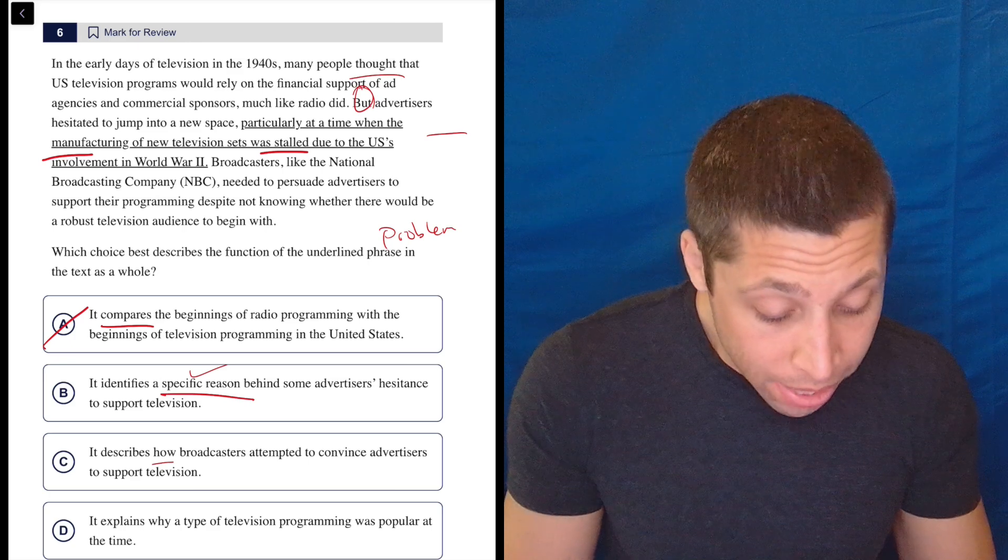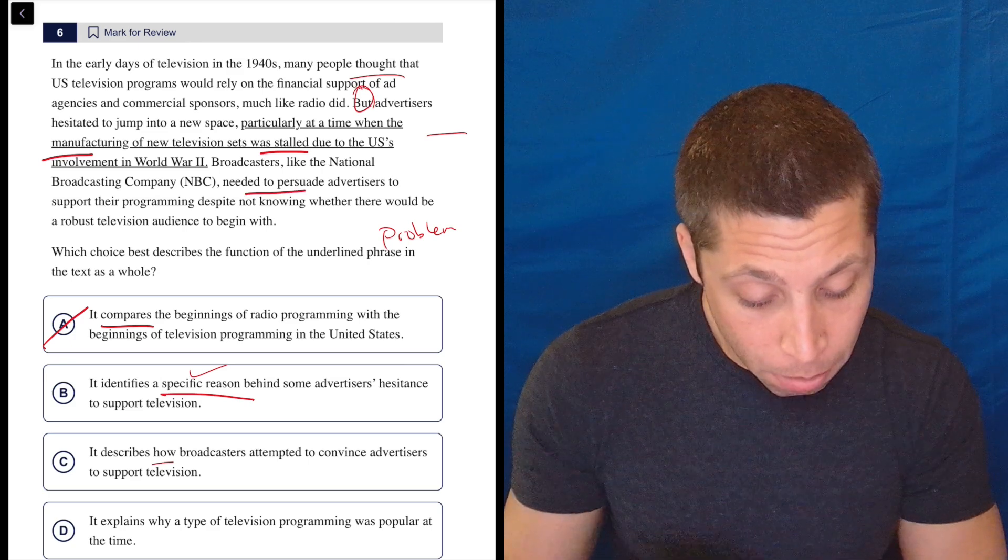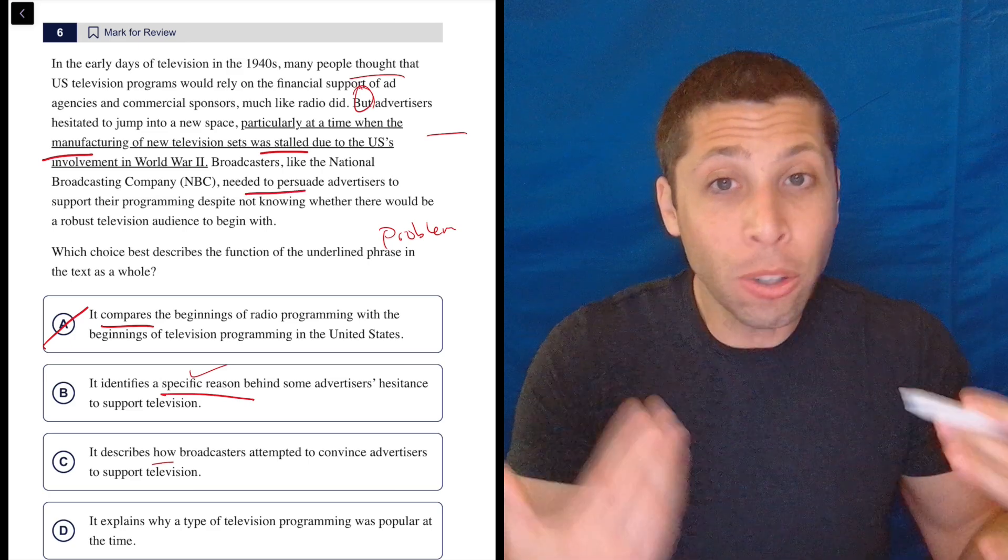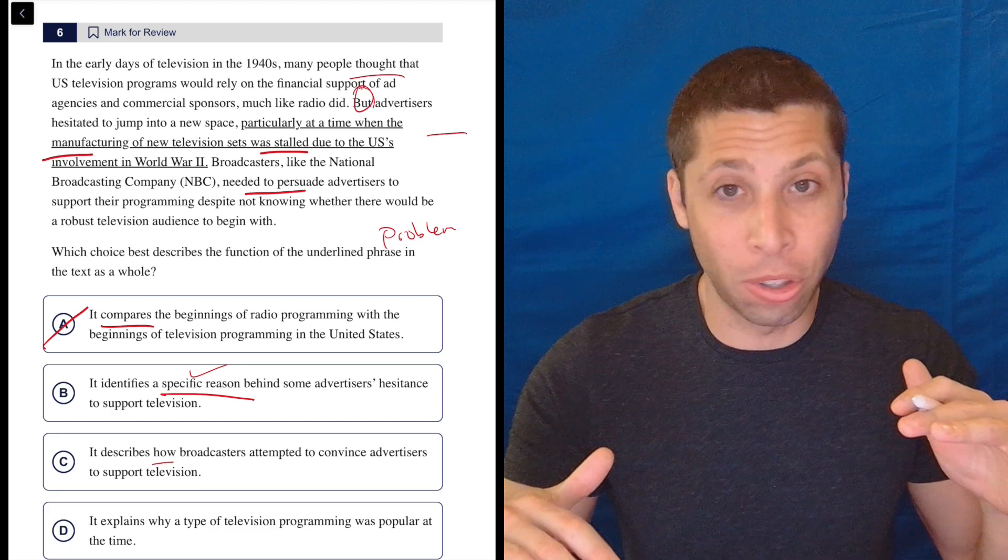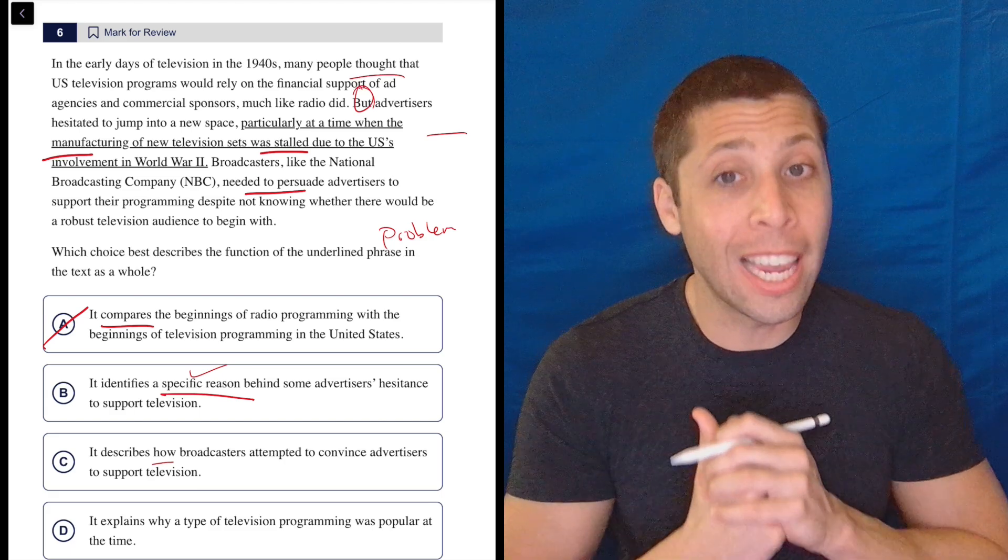Well, it says later that they did try to persuade them, but how did they do that? So first of all, there's nothing in the underlined portion that answers that question, but I don't think there's anything in the passage that does that either.